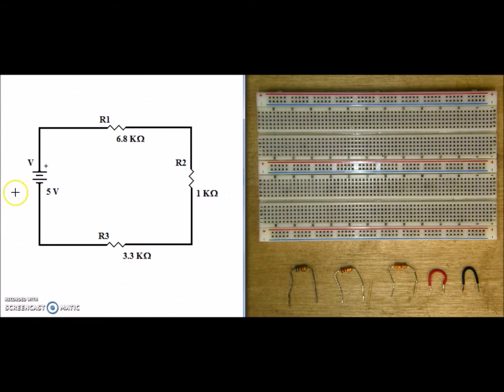We can identify this as a series circuit because current comes out of the source and goes into R3, out of R3 and into R2. From R2, we go into R1, and from R1, we go into the source. There's one path, no choices for current, so this makes it a series circuit.